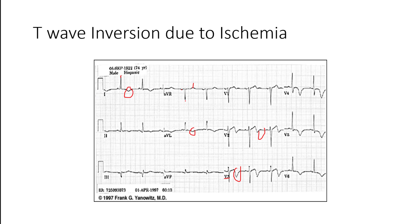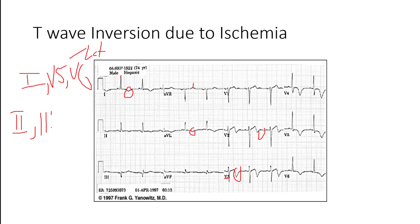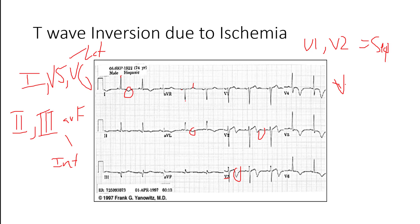A key thing to bear in mind is the redundancies on the 12-lead ECG — areas that look at the same exact regions. Limb lead 1, V5, and V6 look at the lateral wall. Limb leads 2, 3, and AVF look at the inferior wall. V1 and V2 look at the septum. V3 and V4 look at the anterior wall.